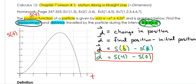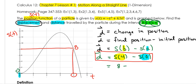What does s(4) mean? When time is 4, what is your position? If I go to time 4 on the graph and look straight up, the position is 8. And s(0): when time is 0, position is 0. So displacement is 8 minus 0, which equals 8.